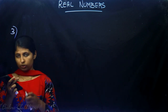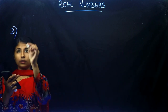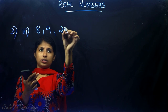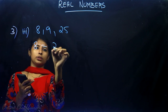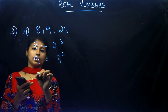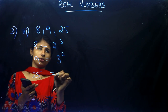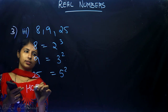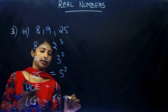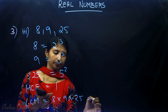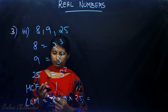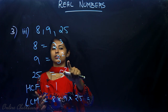For the sub-part with 8, 9, and 25: 8 = 2³, 9 = 3², and 25 = 5². Since there are no common prime factors, HCF = 1. Because all prime bases are different, the LCM is simply the product: LCM = 2³ × 3² × 5².